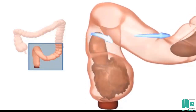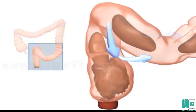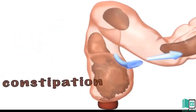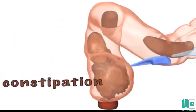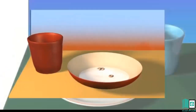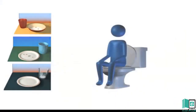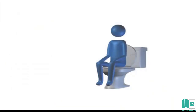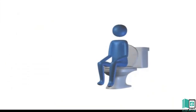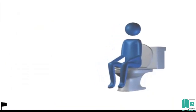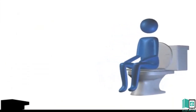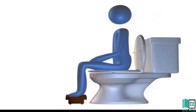We can avoid constipation by adopting a proper lifestyle: taking regular exercise, eating lots of fiber food, fruit, vegetables and cereals, drinking plenty of water — at least 8 glasses every day — and going to the washroom when we have the urge.